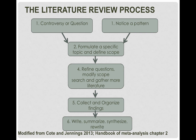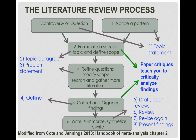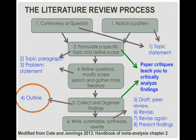Here again is the flowchart of how the literature review process works. You start with a controversy or question, notice a pattern, then formulate a specific topic and scope, refine the questions, and modify the scope — this is probably where all of you are right now. Then we collect and organize findings, write and summarize and synthesize, and rewrite until our story and message and writing are really clear. This is also how the assignments in this class relate to this process. We've done the topic statement, topic paragraph, and problem statement, and we are now at the outline where we're collecting and organizing our findings. Soon we'll have the full draft and will begin the revising process.